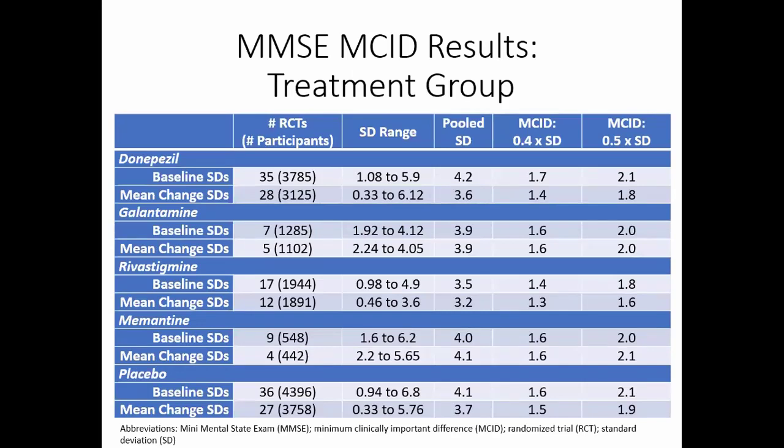Those values were based on all of the included studies in that systematic review, which was for a network meta-analysis, so it combined many different treatment groups as well as placebo together. But sometimes we're making a pairwise comparison. So is this still potentially a helpful method if we're just looking at one, or two or three even, treatment groups?